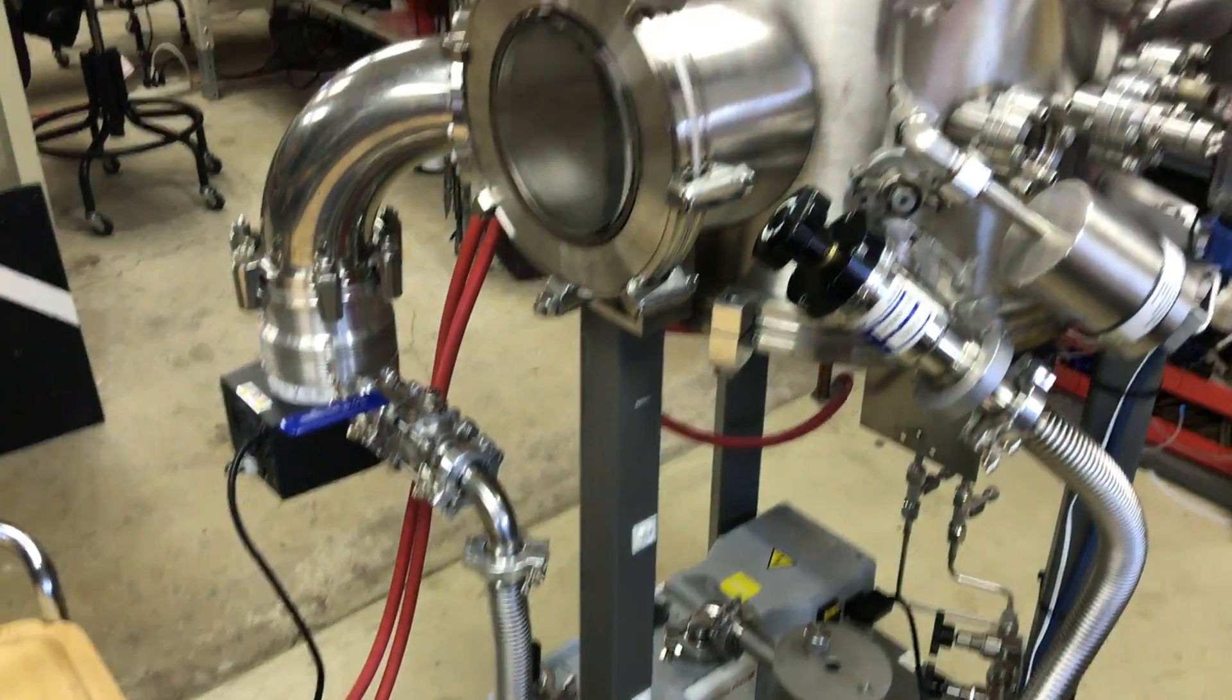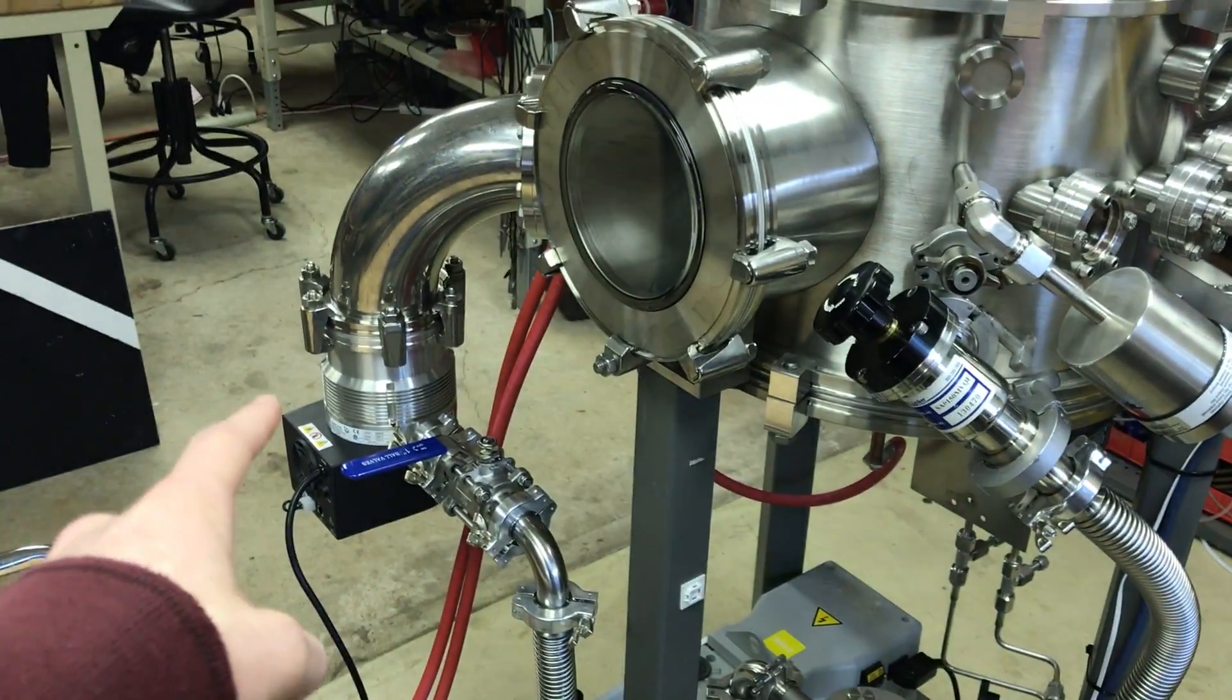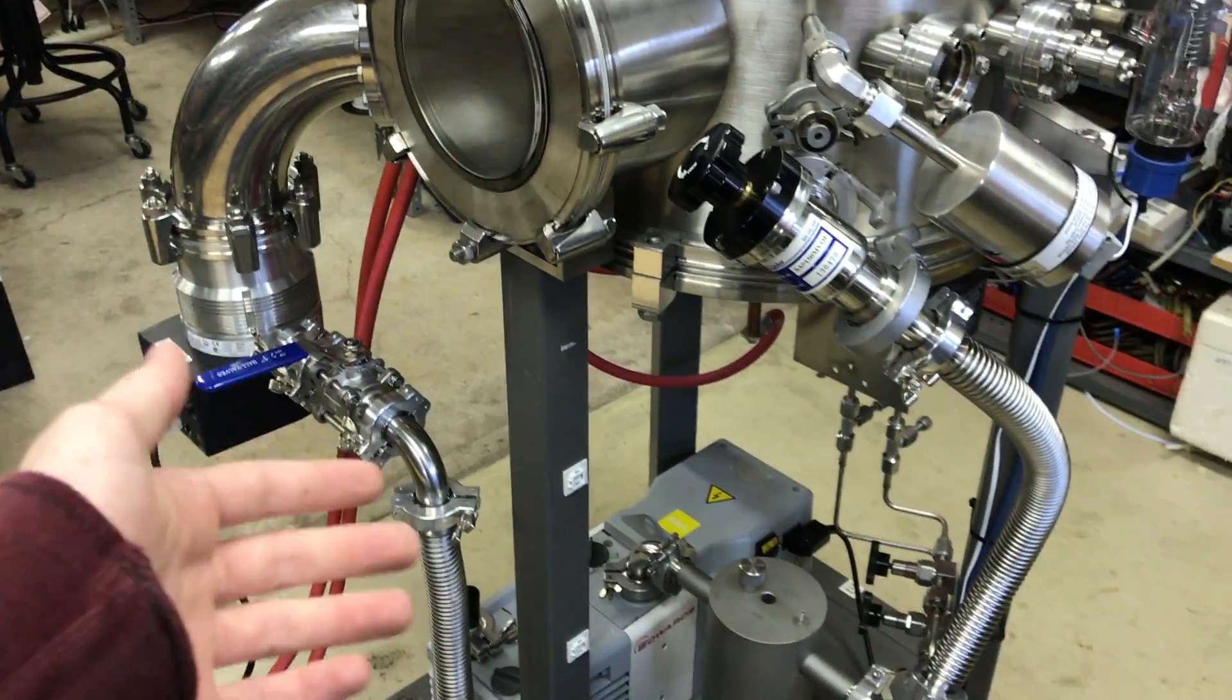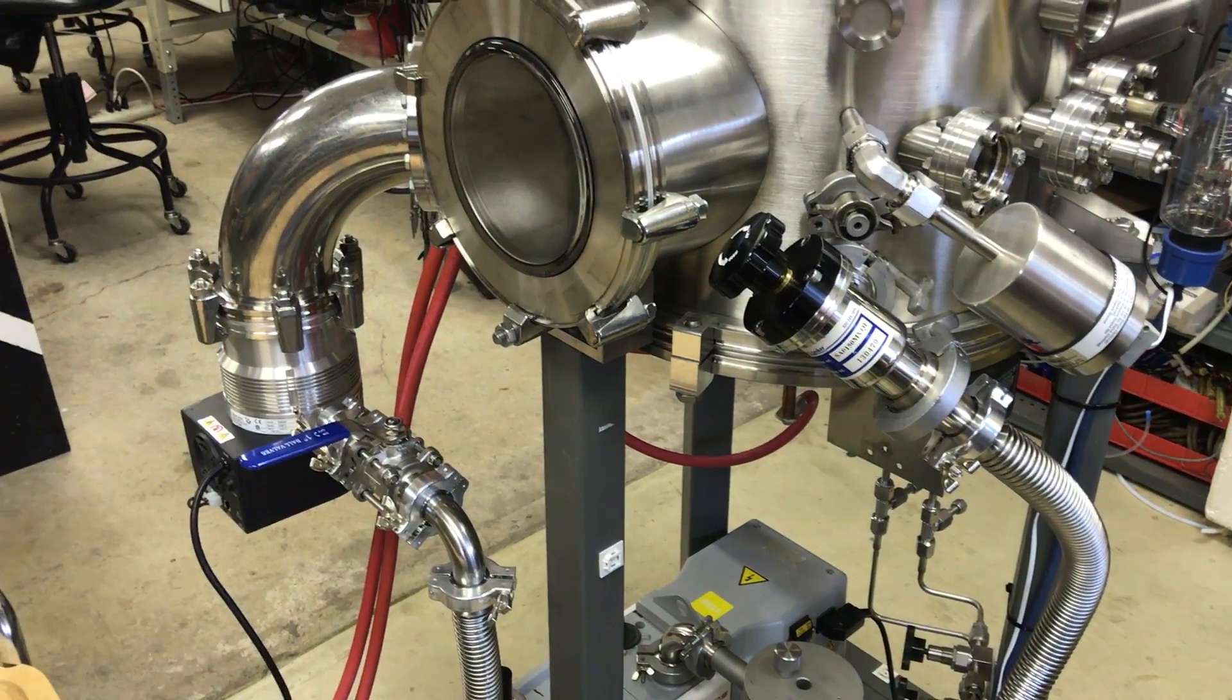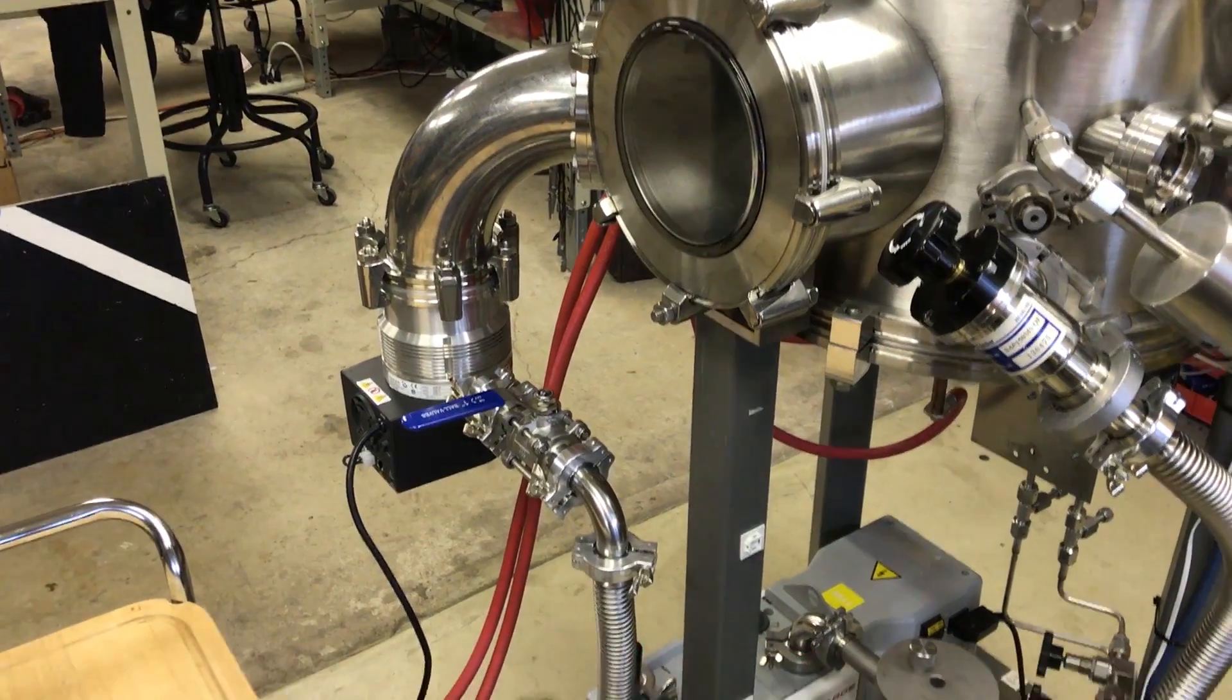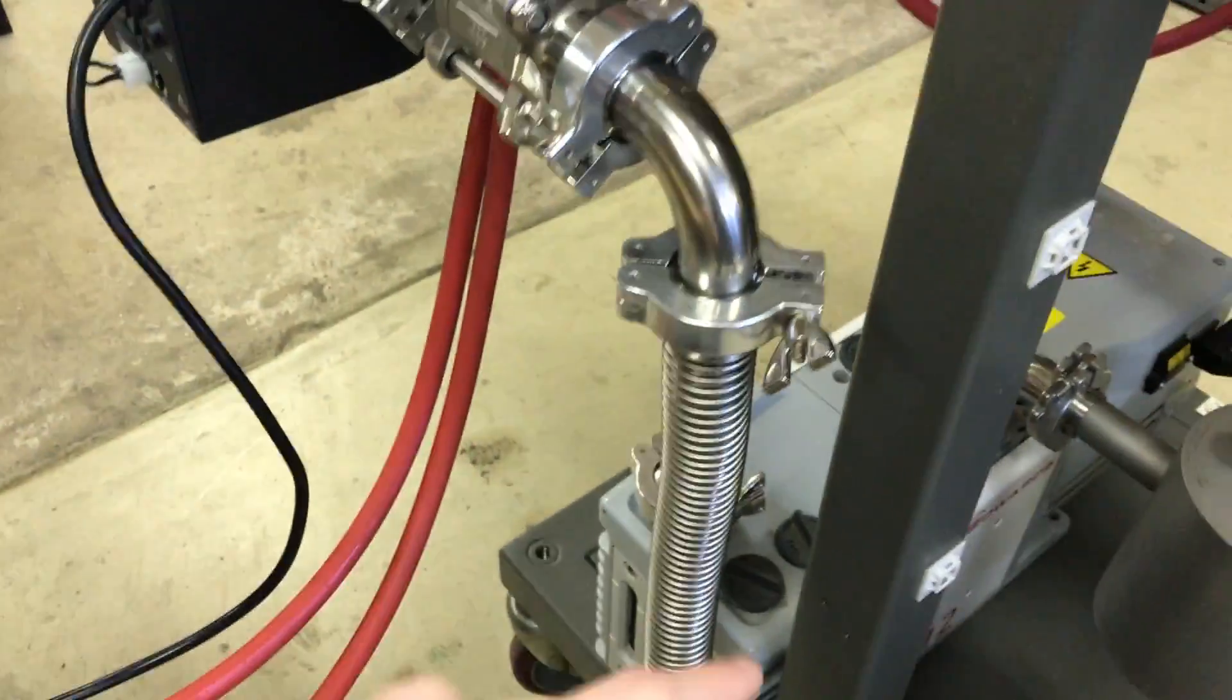And the turbo pump basically compresses the air on the output to arrange that the mechanical pump can start drawing out. Because after a point, the air is so thin in the chamber where the mechanical pump is basically useless. So the turbo pump can help the mechanical pump be able to pull out the remaining air molecules.